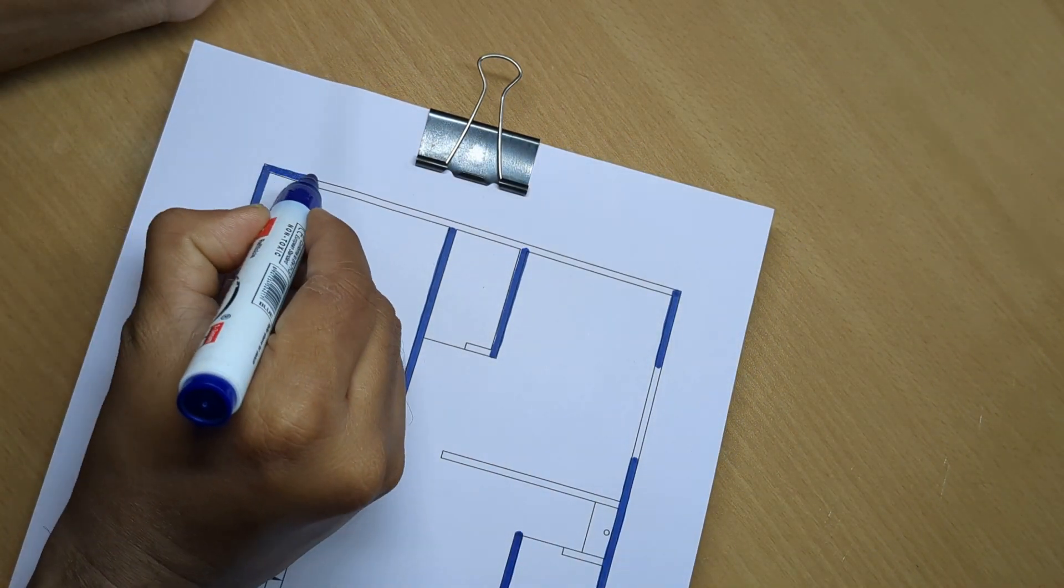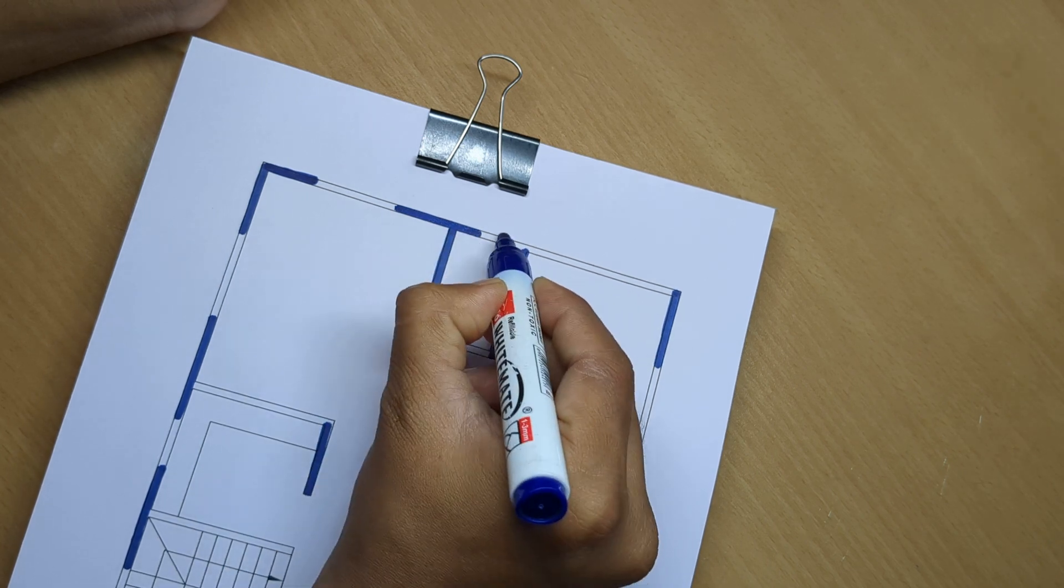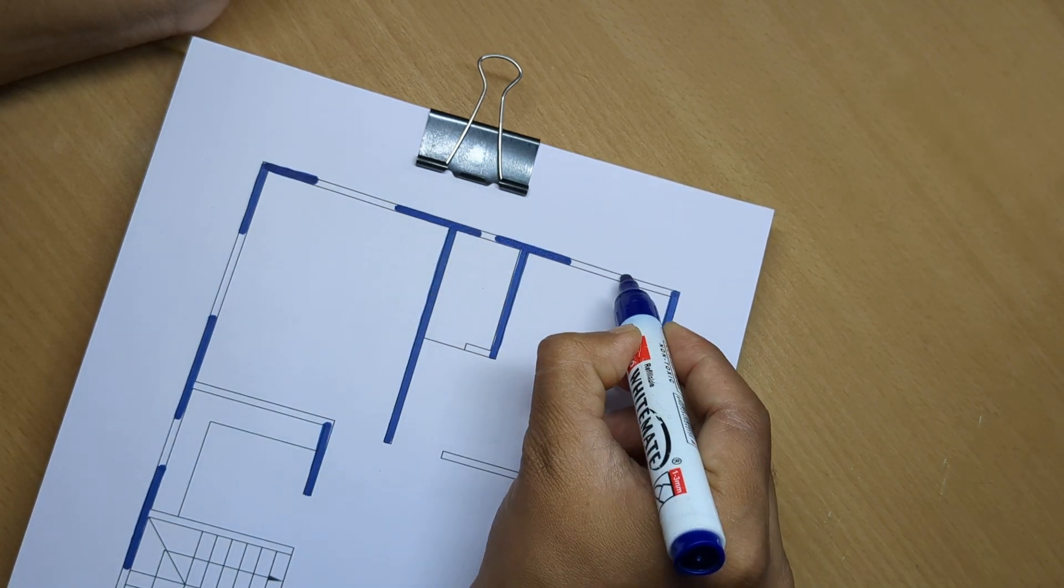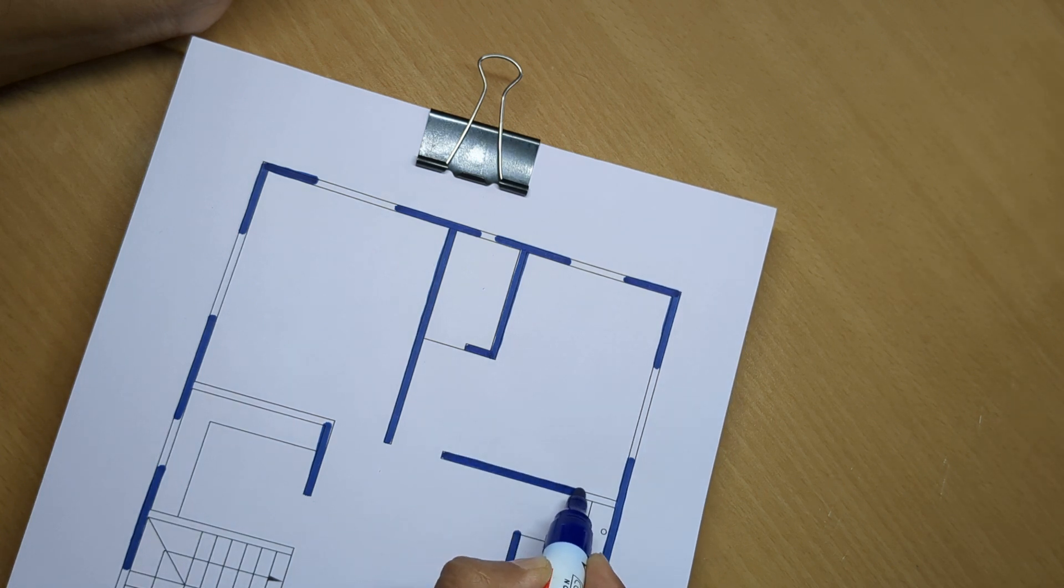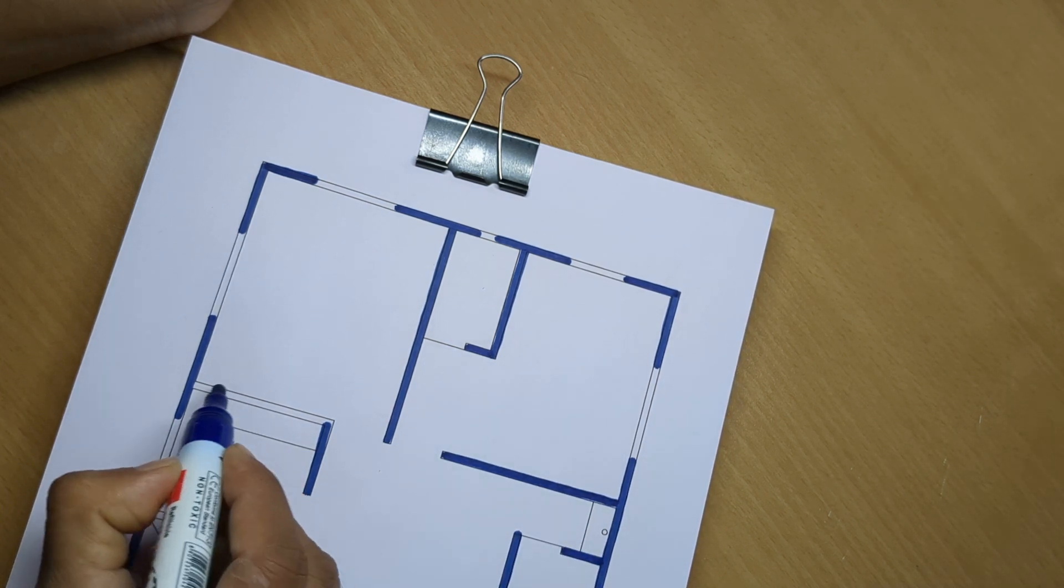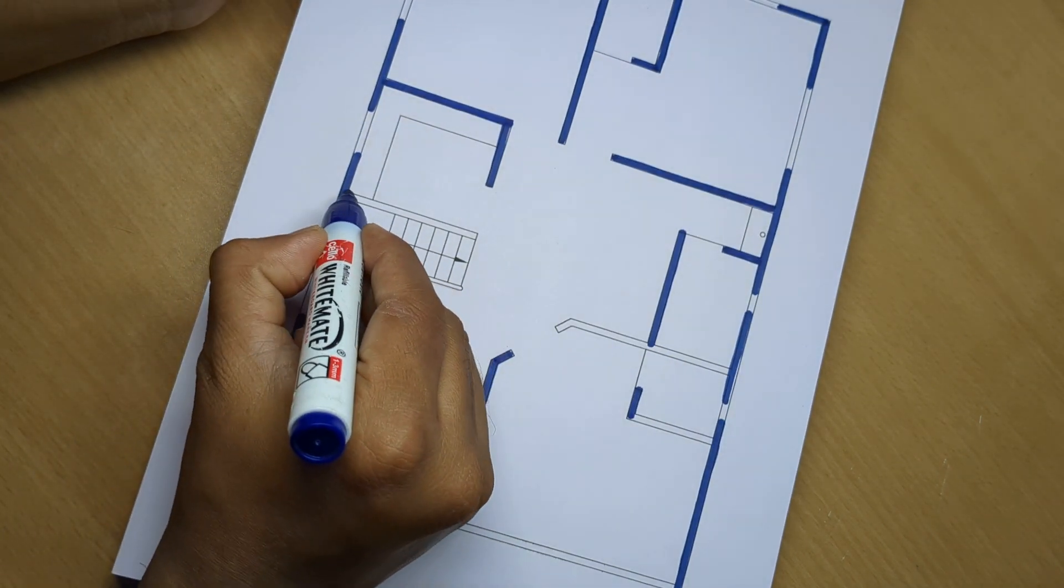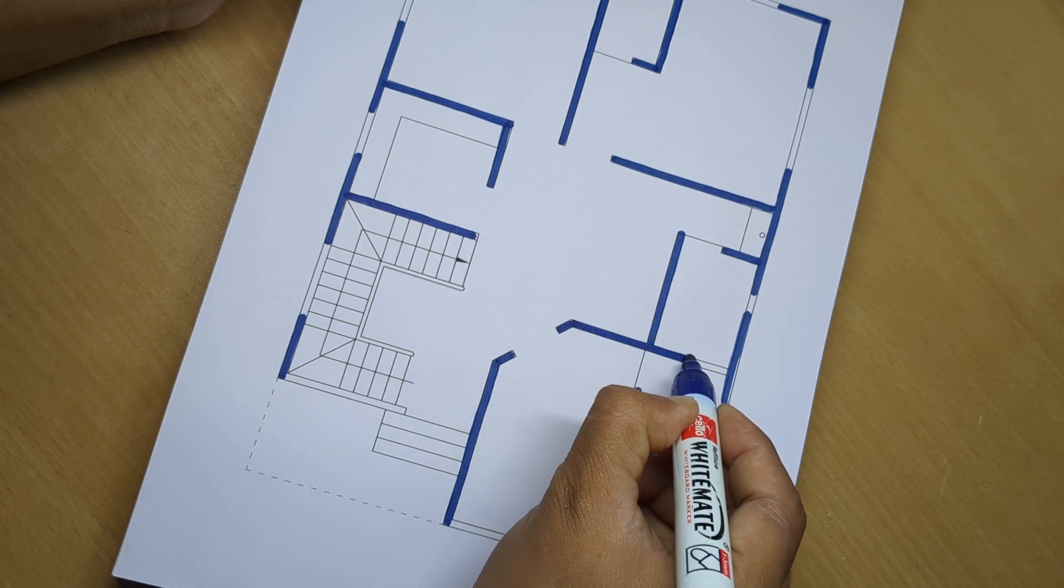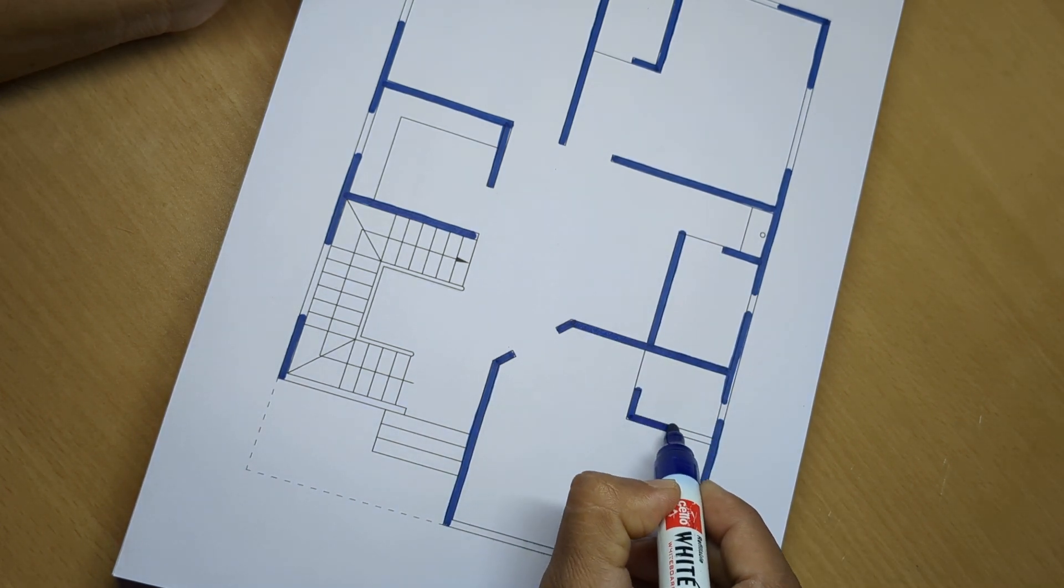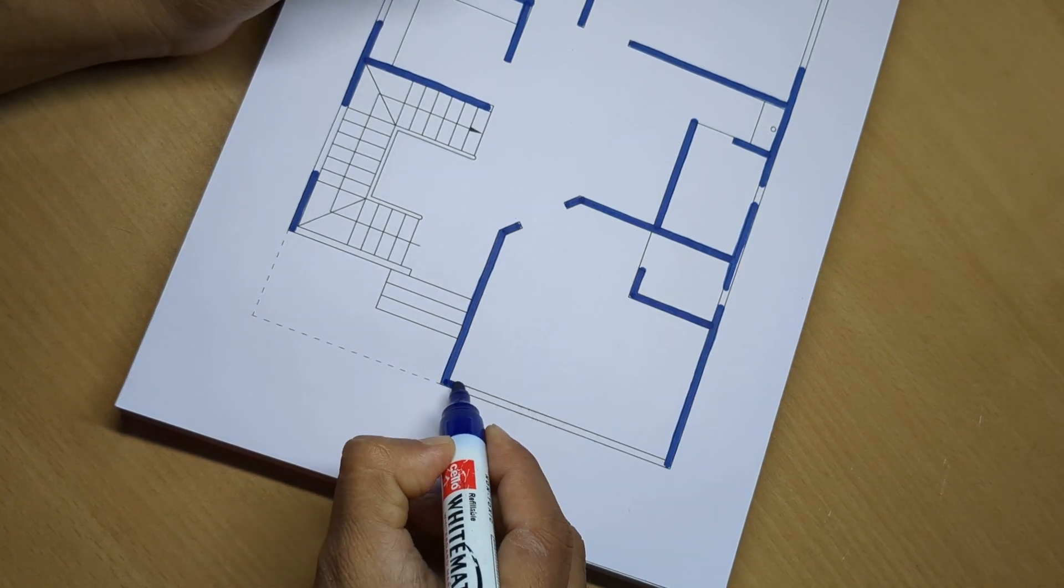Final design share karke apko dikhayenge. First part second, outside wall 125 mm wall, inside partition wall 125 mm wall. Room or toilet ke sare partition wall and front side wall.